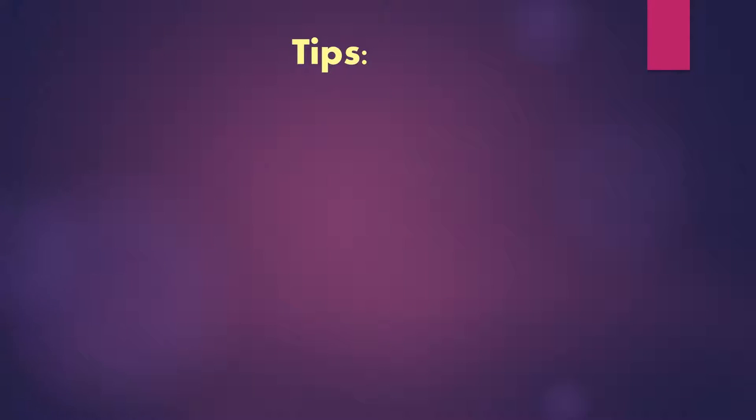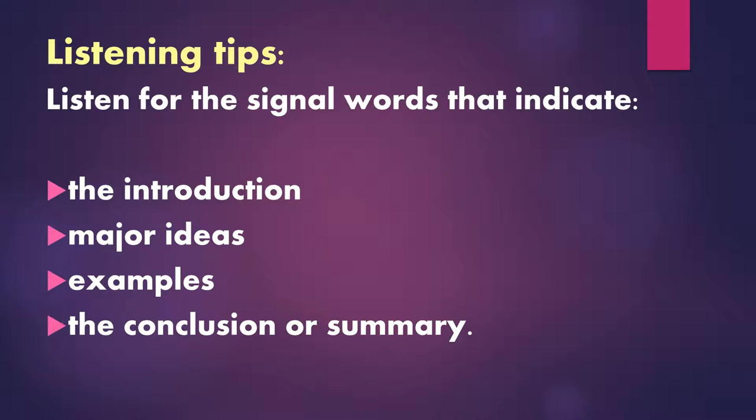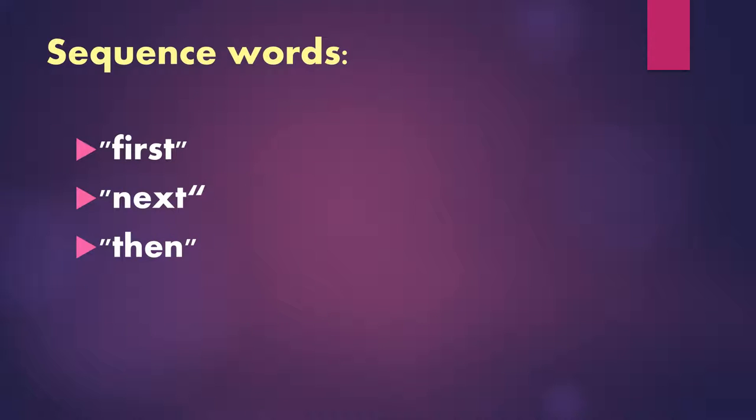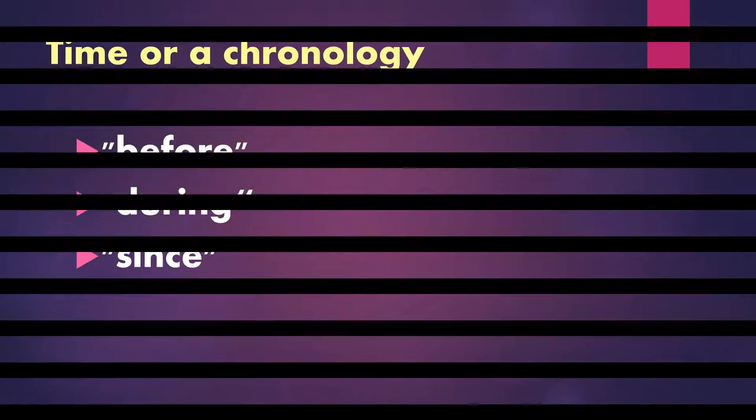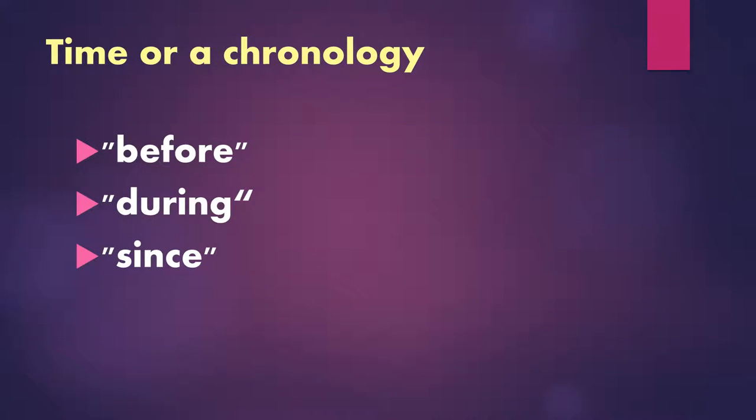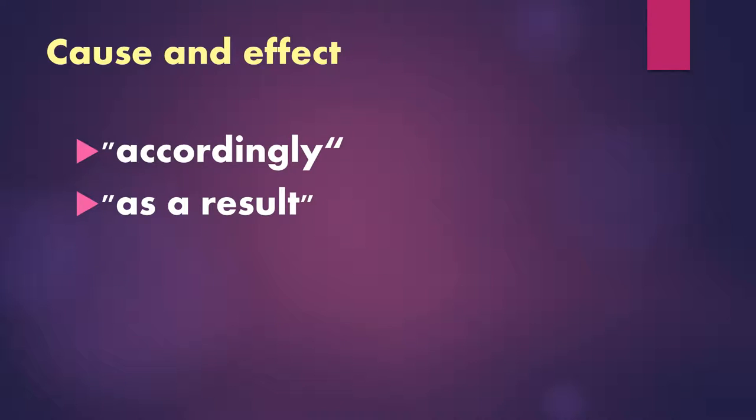Here's a listening tip that can help you understand how a lecture is organized. Listen for signal words that indicate the introduction, major ideas, examples, and the conclusion or summary. These might be sequence words like first, next, and then. Or they might indicate time or chronology like before, during, or since. Or they could show cause and effect like accordingly or as a result.